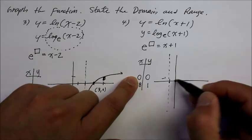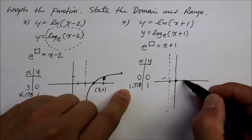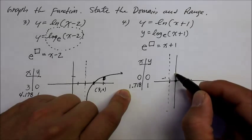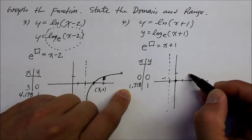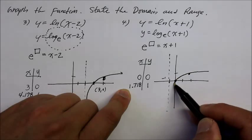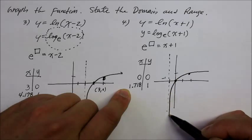Now plot this, 0 and 0, there it is. And if x is 1.718, here's 1 and 2, so it's like somewhere here, then y is 1, somewhere there. And that's all I need to give myself an estimate for the graph. There it is.